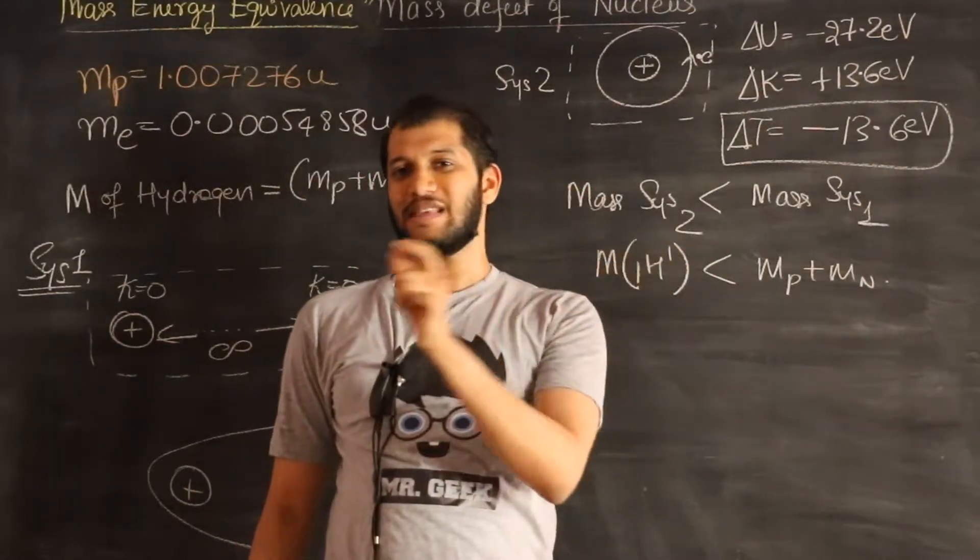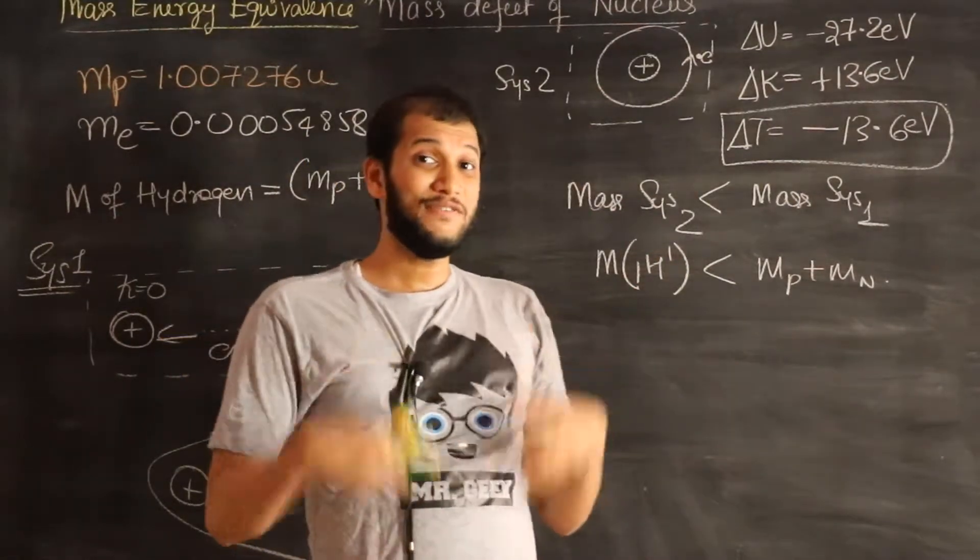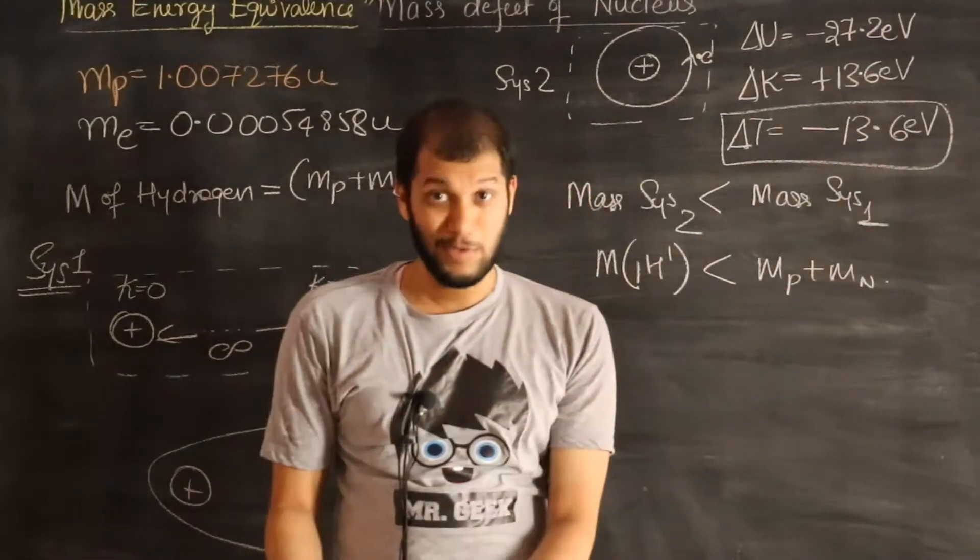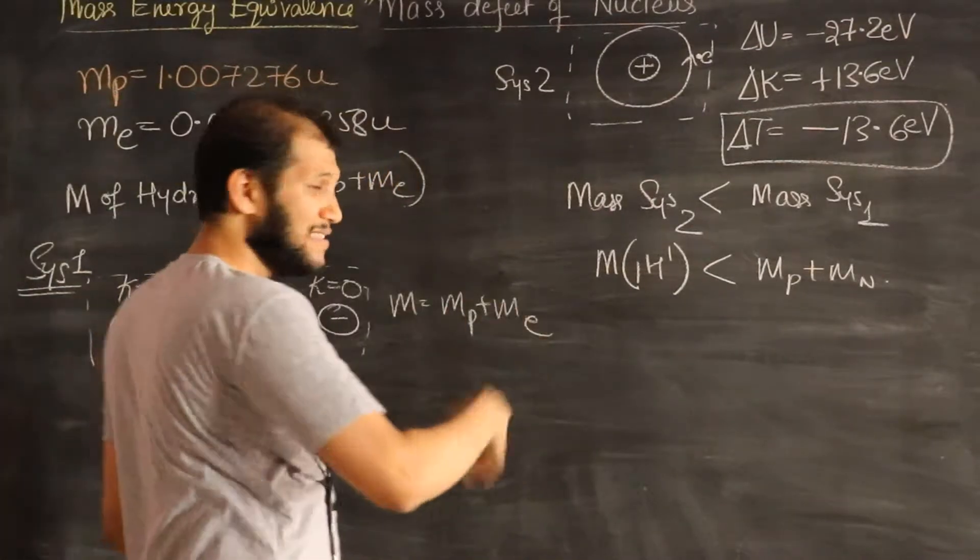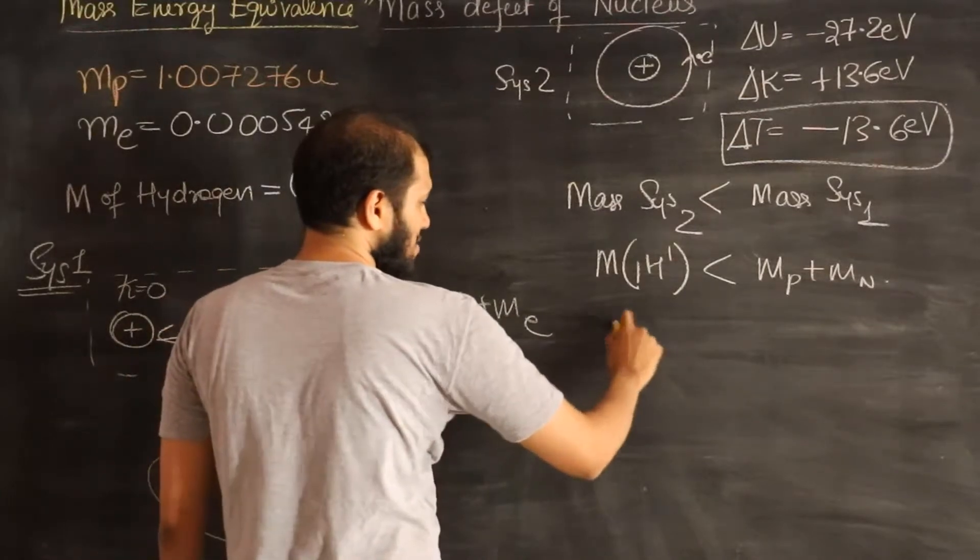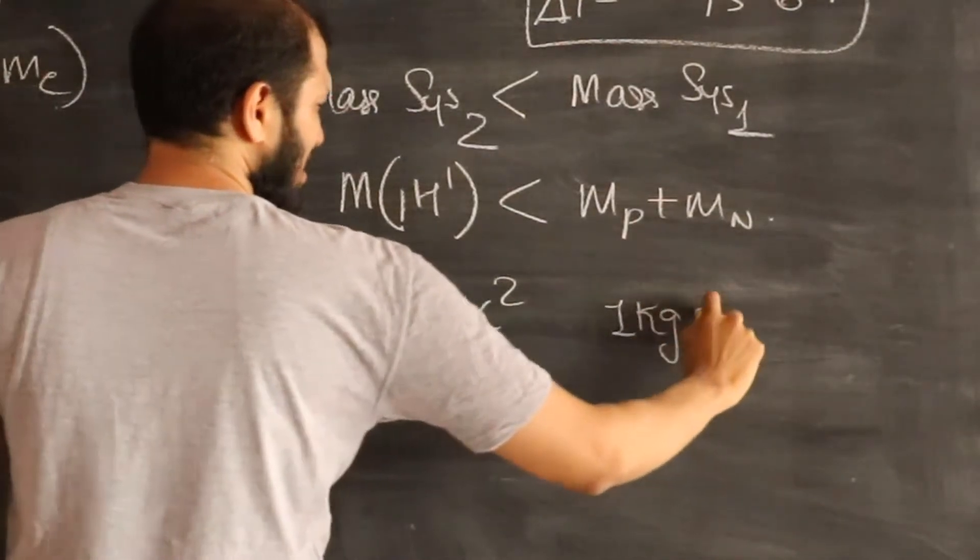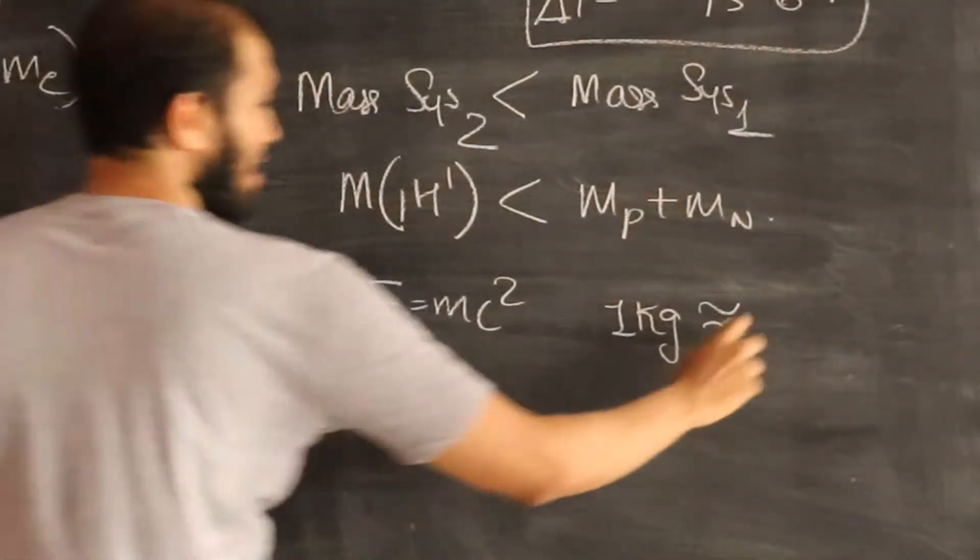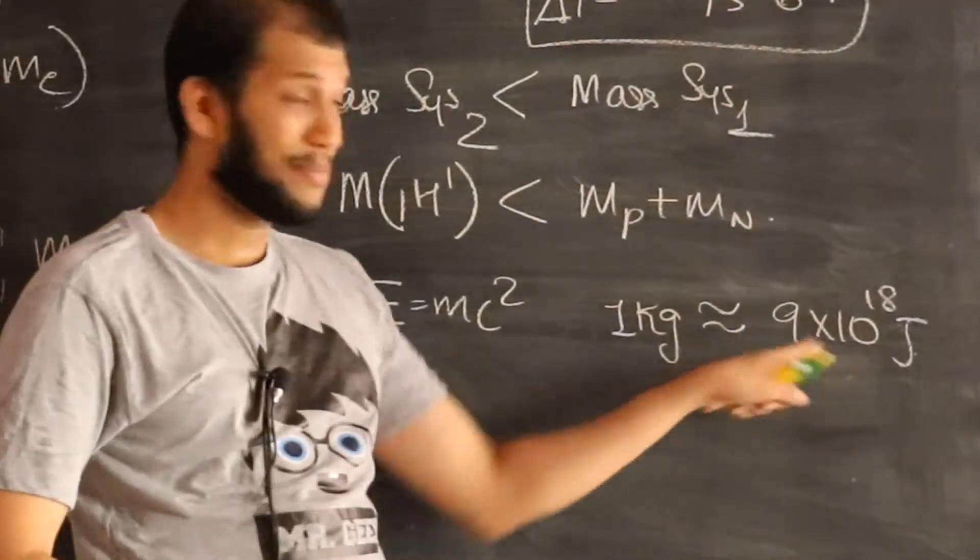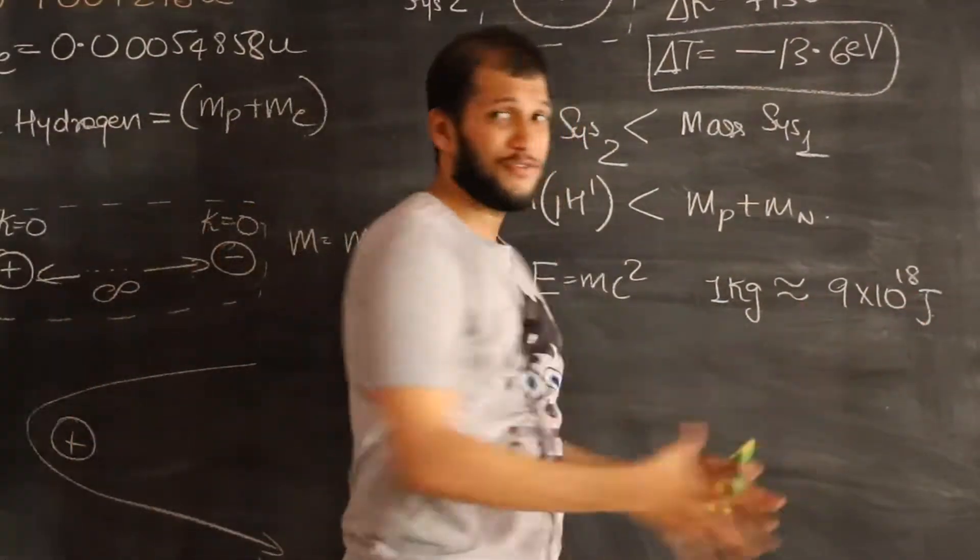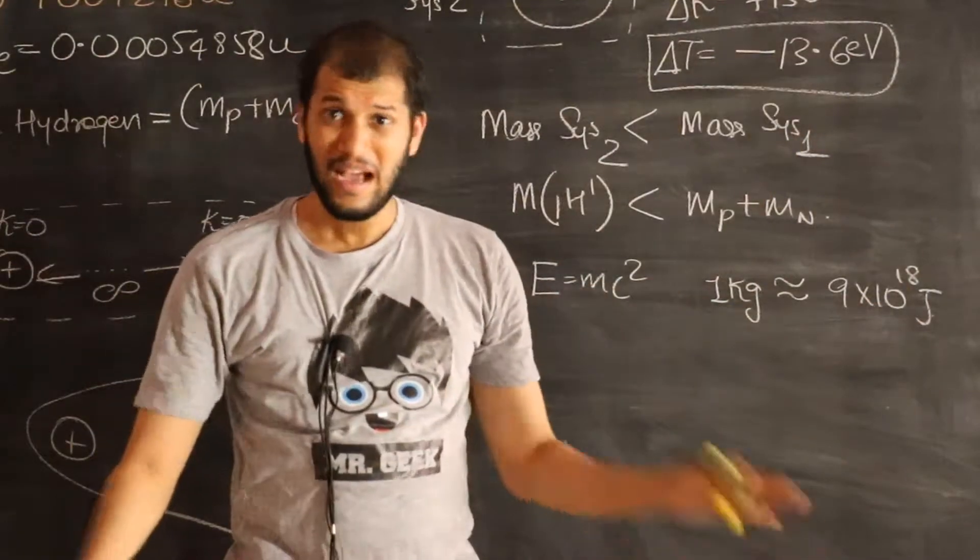To do that, we need to use Einstein's equation E equals MC squared, not in the usual units of kilograms and joules, but instead we'll use it in a different unit of electron volt and AMU. So here's something, here's a conversion factor which you can remember. It turns out that if you plug in the numbers, E equals MC squared is telling us that 1 kilogram is equivalent to an energy of 9 times 10 to the power 18 joules, right? It doesn't mean that 1 kilogram can be converted to that energy. It just means that if you have that much energy, 9 times 10 to the power 18 joules of whopping energy enclosed in some system,